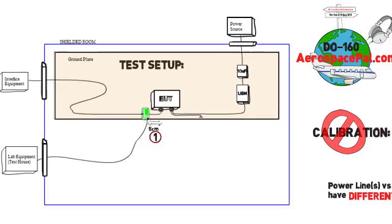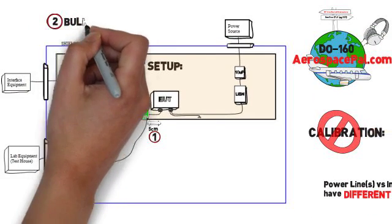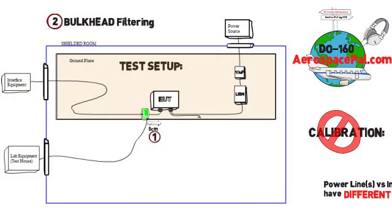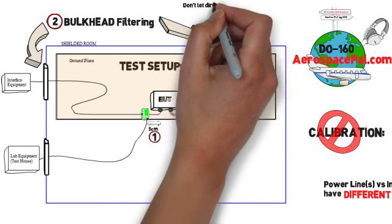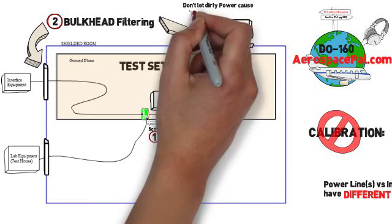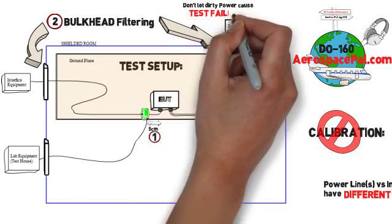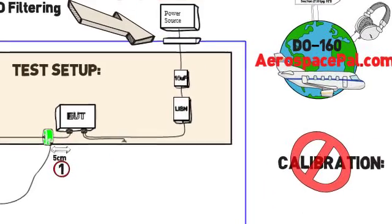Number two, and this one's probably the most important, your bulkhead filtering should adequately filter out the noise from power sources and other simulated interfaces that are outside the chamber. More often than not, emissions failures or false failures come from your interfaces and not from your actual EUT because of poor filtering.